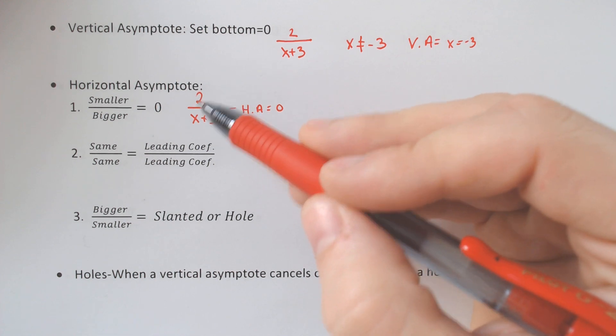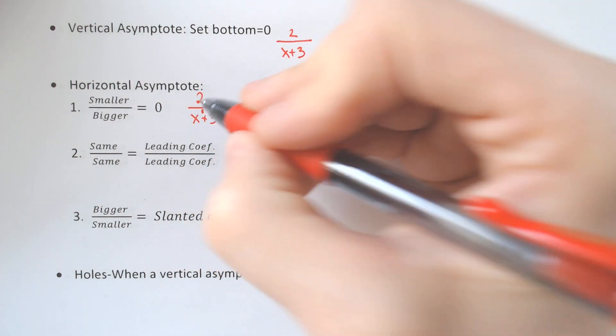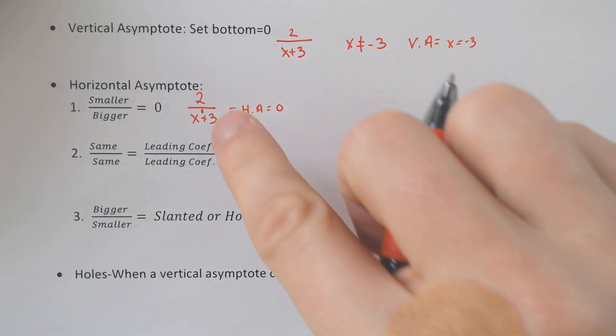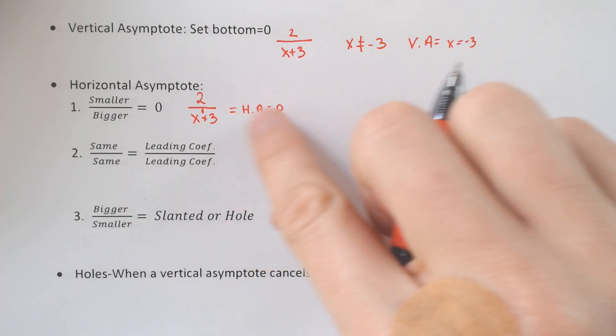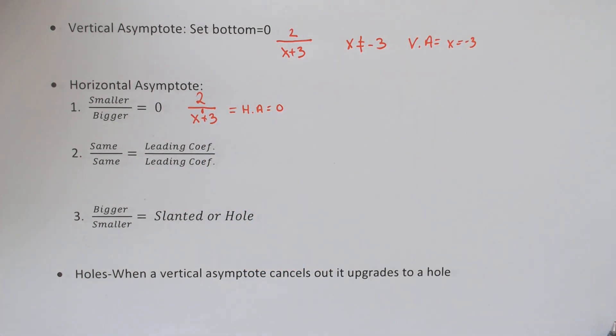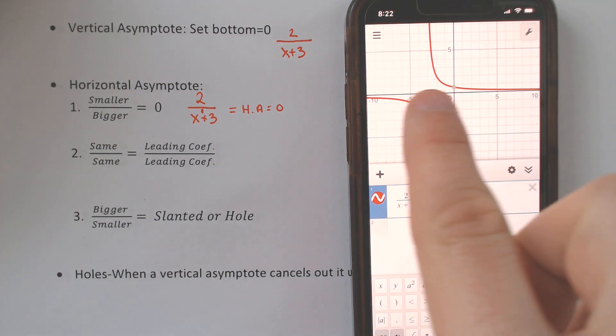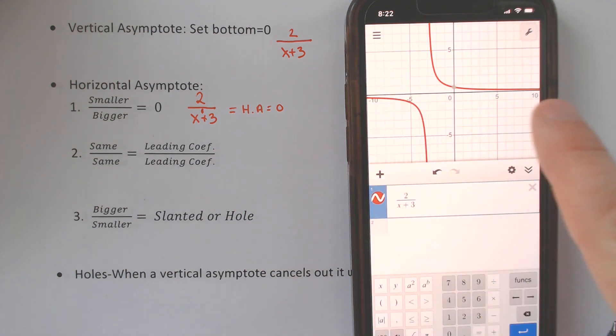you have an x to the 1st on the bottom of the fraction, so a smaller exponent over a bigger exponent will always produce a horizontal asymptote of 0, which is why you can see this horizontal line at 0 here, where it does not cross the graph.